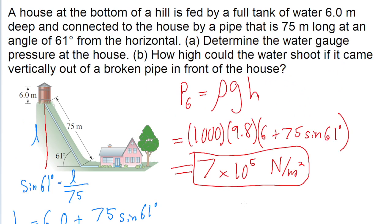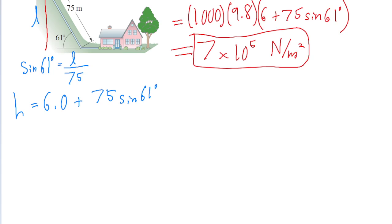The second part of the problem asks what would happen if a vertical pipe like that broke in front of the house and were to start leaking — how high could the water shoot upwards? The important thing to understand is that since the water, even at the bottom of the hill, has the force from the water that came all the way up from the tank, then if a pipe broke, it could feasibly shoot as high up as the tank itself. Realistically that might not happen because of friction, but ignoring friction, we can expect the water would be able to shoot right up to the very top of where the tank is. So the answer to part B is just the same value we established for H: 6 plus 75 times the sine of 61 degrees.